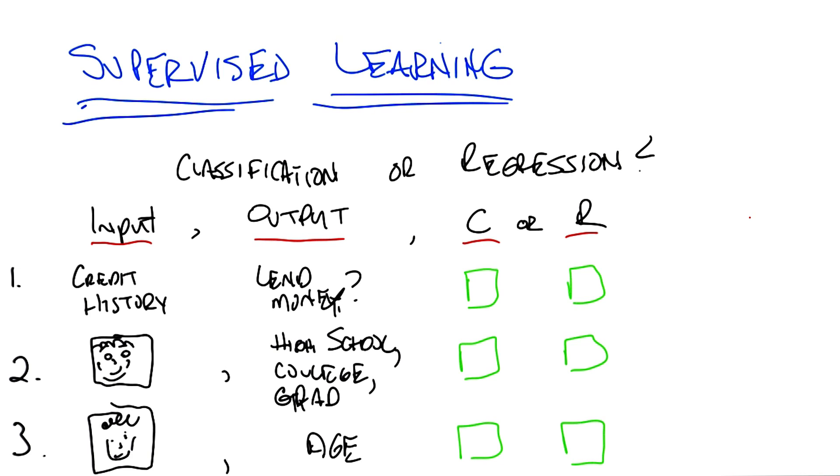You have three questions here and we've divided the world up into some input to some learning algorithm, whatever that learning algorithm is. The output that we're expecting and then a box for you to tell us whether it's classification or regression.